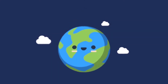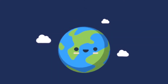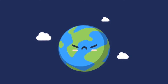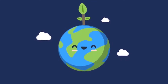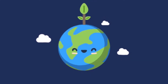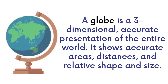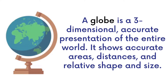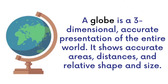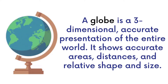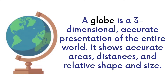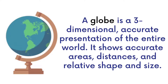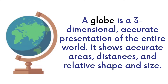Different places in our planet, which is the Earth, can be located using a globe. A globe is a three-dimensional, accurate presentation of the entire world. It shows accurate areas, distances, and relative shape and size.